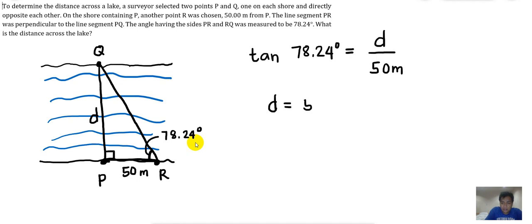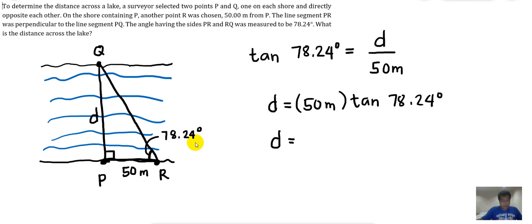Tangent of 78.24 degrees equals opposite over adjacent, which is D divided by 50 meters. Cross-multiplying, D equals 50 meters multiplied by the tangent of 78.24 degrees. Therefore, D equals 240.17 meters. The distance between points P and Q — the distance across the lake — is 240.17 meters.